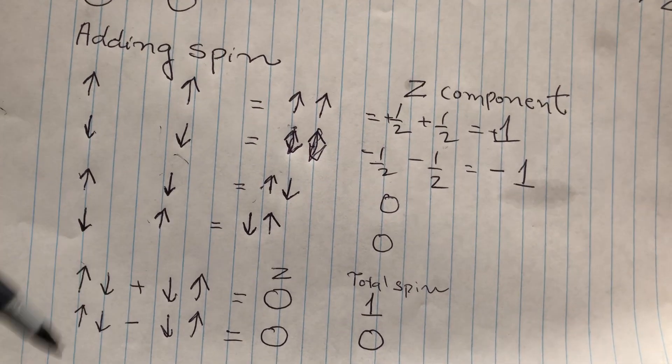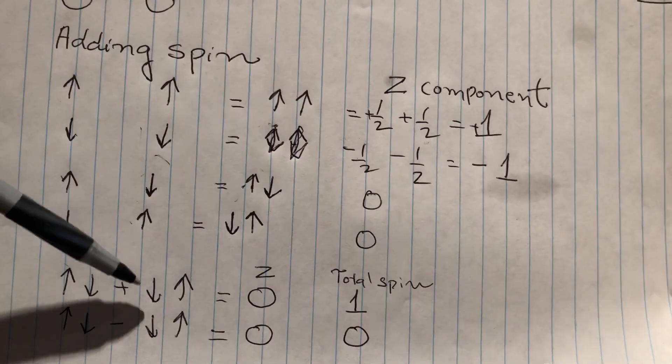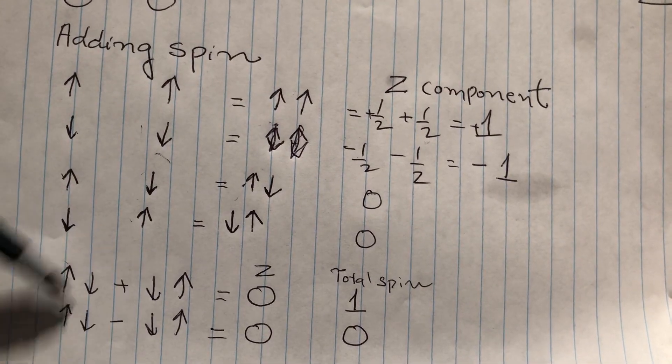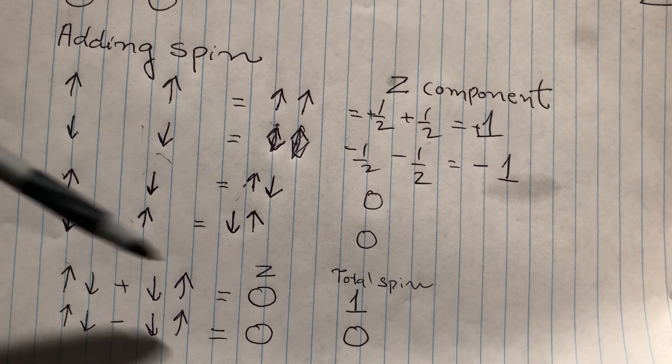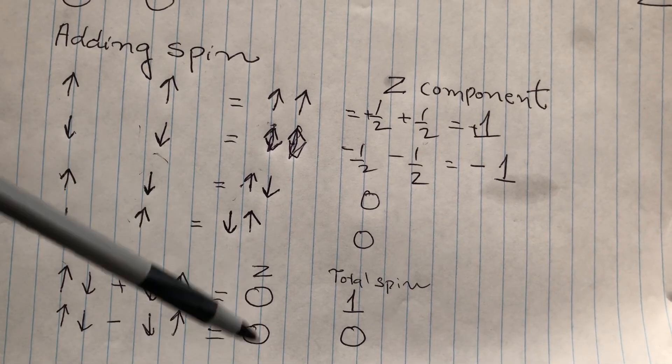You can plus or you can make minus. In both cases, because the electron spins are opposite, you get z component of zero.